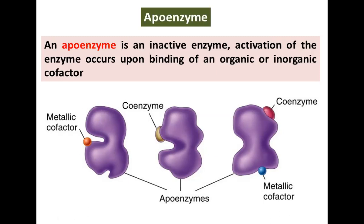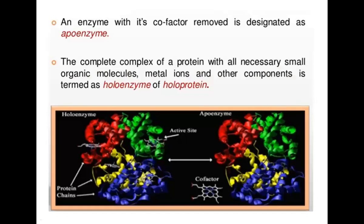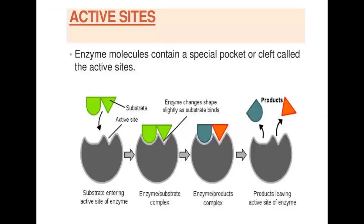The apoenzyme is an inactive enzyme that is not yet activated. When it binds with a metallic cofactor and a coenzyme, the apoenzyme becomes functional. The complete complex structure of a protein with all necessary small organic molecules, metal ions, and other compounds is termed the holoenzyme. In the holoenzyme, protein chains, active sites, and cofactors are all present.